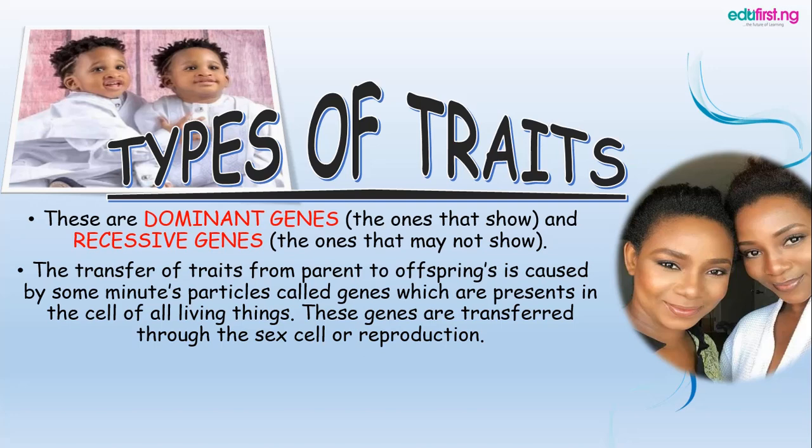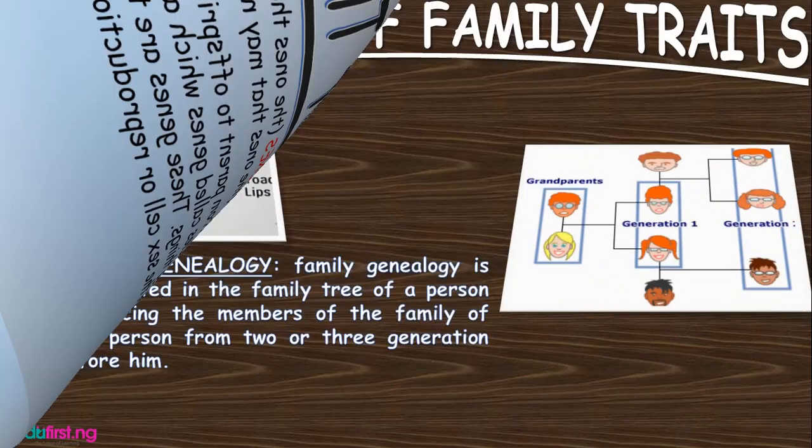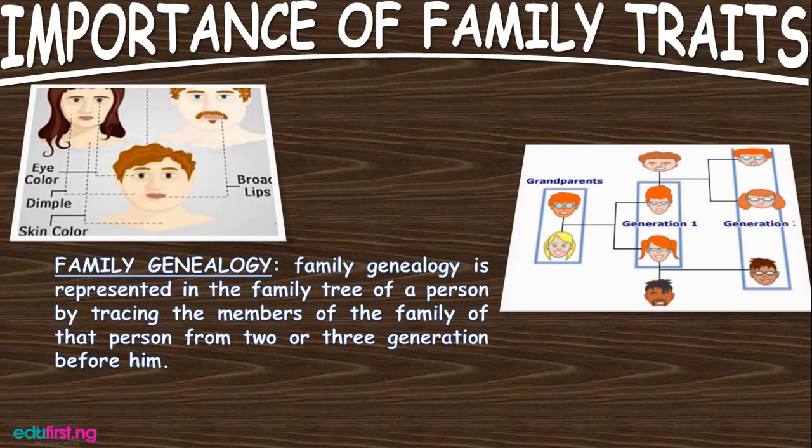The importance of family trends: first, family genealogy. Sometimes it is represented in family trees, tracing a child through the second or third generation. We say, okay, his dad is from such-and-such a place — they have the same eyes, they have the same nose, they have the same walking steps, things like that. Secondly, we'll talk about intelligence.